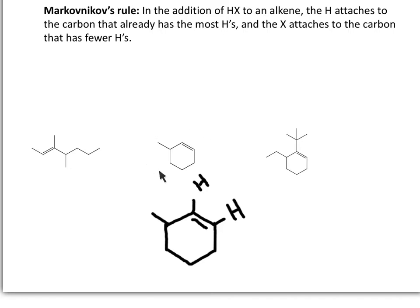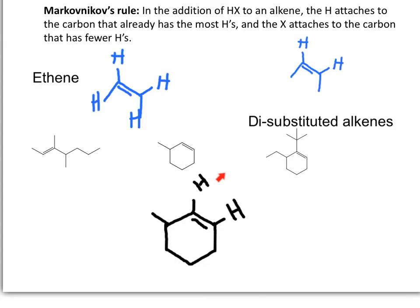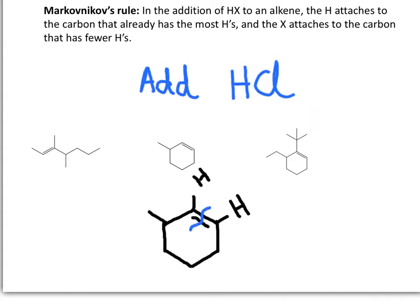The first example is the addition to 3-methylcyclohexane. In a di-substituted alkene, we have replaced two hydrogens with carbons. Because both of these carbons have the same number of hydrogens, we say that this addition is a non-selective reaction. We will still break the double bond to add hydrogen to one carbon and Cl to the other carbon, giving more or less equal amounts of both products.